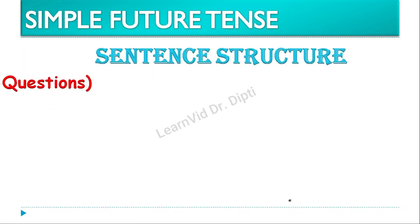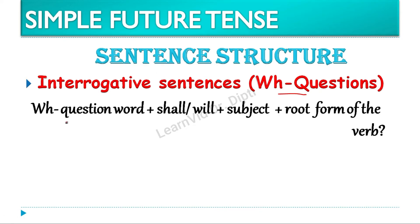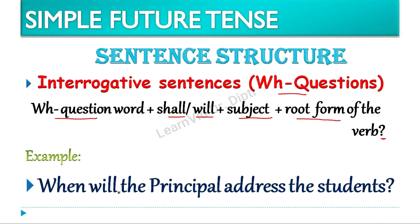Then comes the sentence structure of interrogative sentences with wh question words — like what, where, which, when. Toh in se hum kaise sentence structures bana sakte hain. Iske liye jo rule hai woh same rahega. Bhas yaha par pahle aayega wh question word, phir shall ya will, aur phir uske baad subject, then the root form of the verb, and in the last the question mark will come. Example: When will the principal address the students? Yaha par 'when' is the wh question word, then will, then the principal is the subject, and address is the root form of the verb.